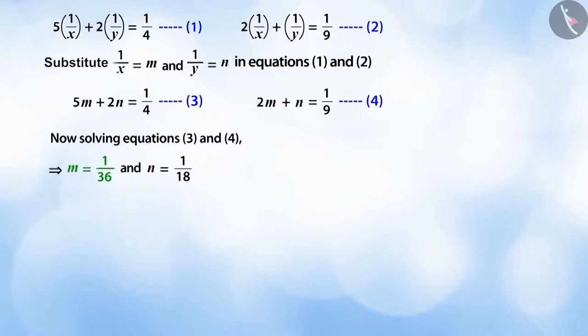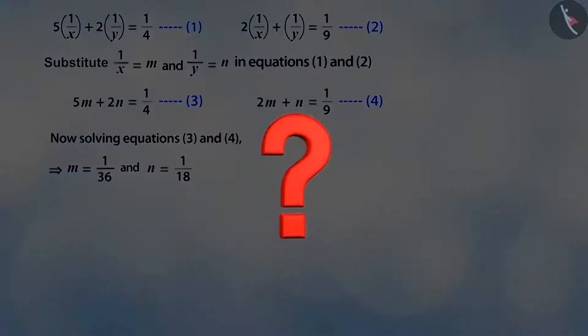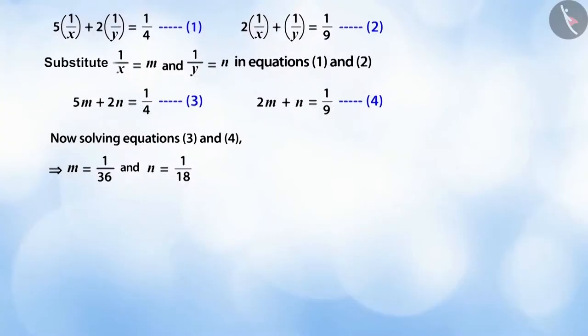When we solve the pair of equations, we get the value of m as 1/36 and n as 1/18. But can you tell what do we need to do in order to find the values of x and y? Because we assumed 1/x as m and 1/y as n.